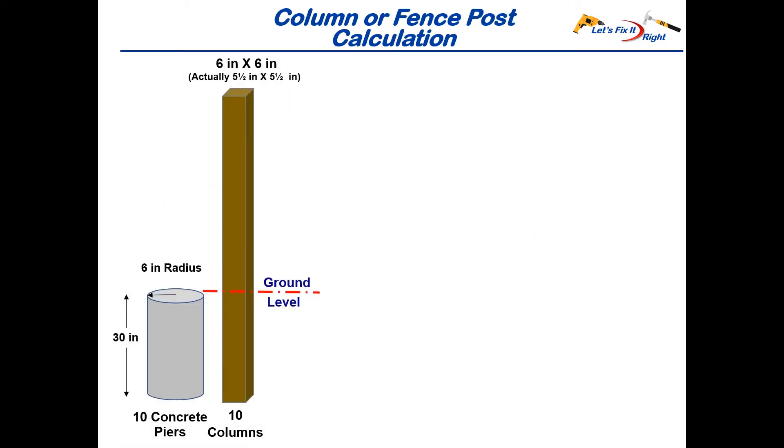In this example, we're going to calculate the concrete required for 10 concrete piers with submerged columns. This approach also works for submerged fence posts. In this case, we are working with piers with a 6 inch radius, a 30 inch height, and submerged 6 by 6 columns, which are actually 5 1/2 by 5 1/2 inches.